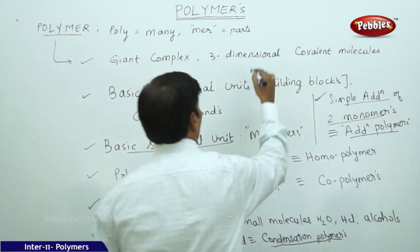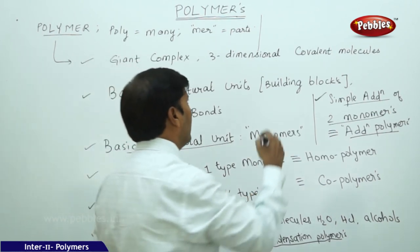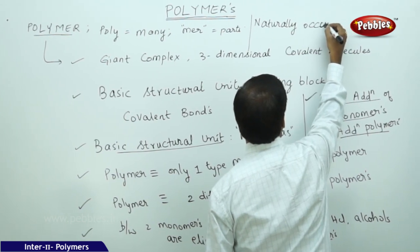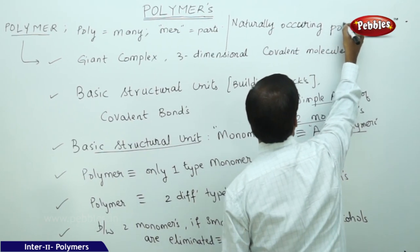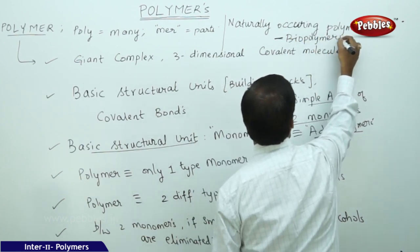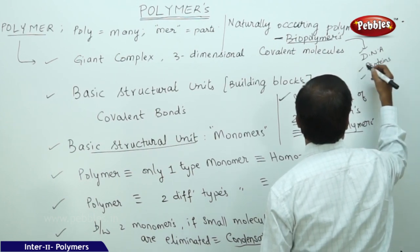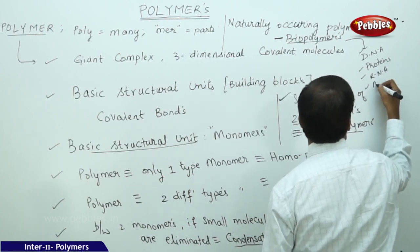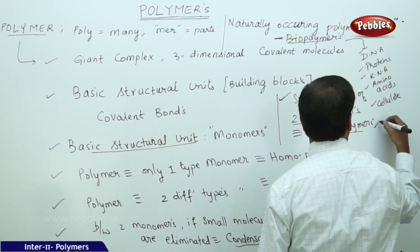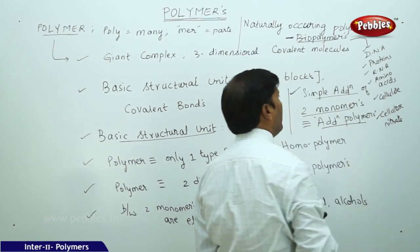There are naturally occurring polymers and synthetic polymers. Naturally occurring polymers are simply called biopolymers. Examples include DNA, proteins, RNA, amino acids, cellulose, and cellulose nitrate — all of these come under biopolymers.